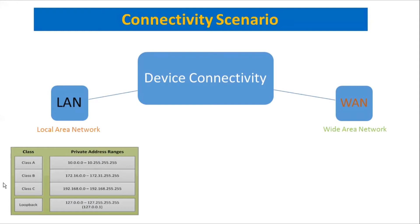The 127.x.x.x range is always loopback — we call it loopback because we can test our IP using it. The 192.168 scheme is what we will configure on our LAN network. This is the scenario we are going to discuss.